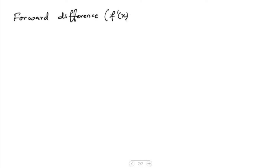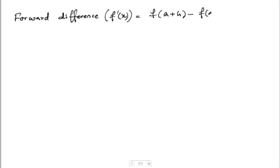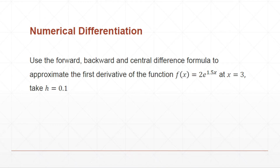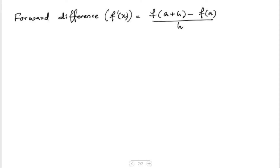Let's go ahead and start working on this. For the forward difference, the first derivative of the function, our formula is f of a plus h minus f of a, divided by h. Here a is x equal to 3, and h is 0.1.